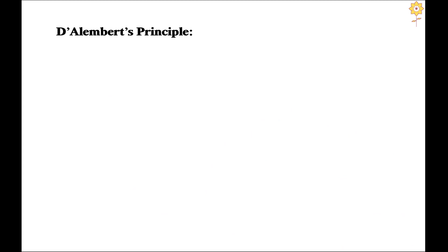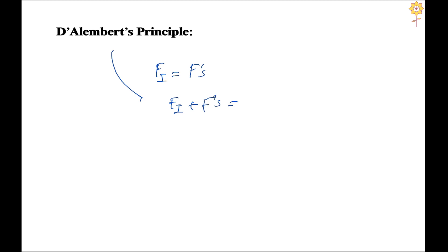D'Alembert's principle and Newton's method are essentially equivalent. Newton's method states that the inertia force equals the summation of all remaining forces in the direction of motion. D'Alembert's principle states that the inertia force plus the summation of the remaining forces should equal zero — which is simply rearranging the same equation to the other side.